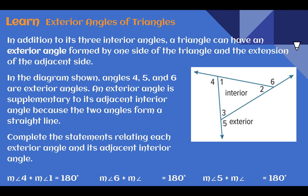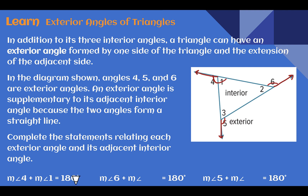Let's learn exterior angles of triangles. In addition to the three interior angles, a triangle can have an exterior angle formed by one side of the triangle and the extension of that side. In this diagram, angles 4, 5, and 6 are exterior angles. The interior angle and its exterior angle are supplementary — they make a straight angle and add to 180. So angle 1 and angle 4 add to 180; angle 6 and angle 2 add to 180; and angle 5 and angle 3 add to 180.